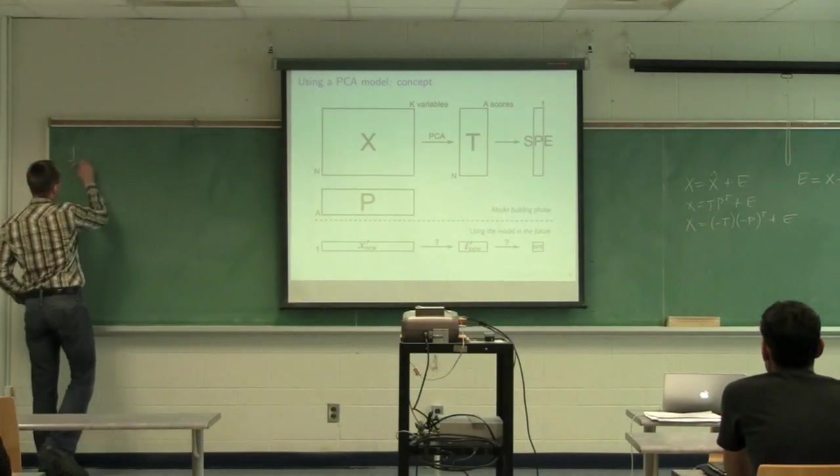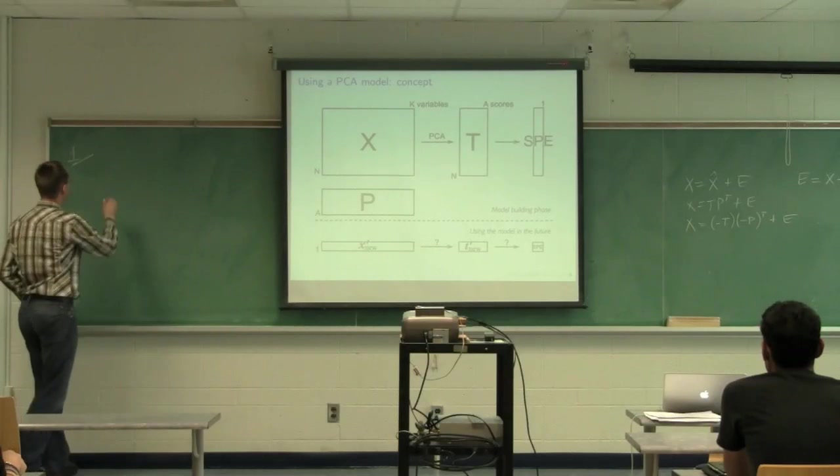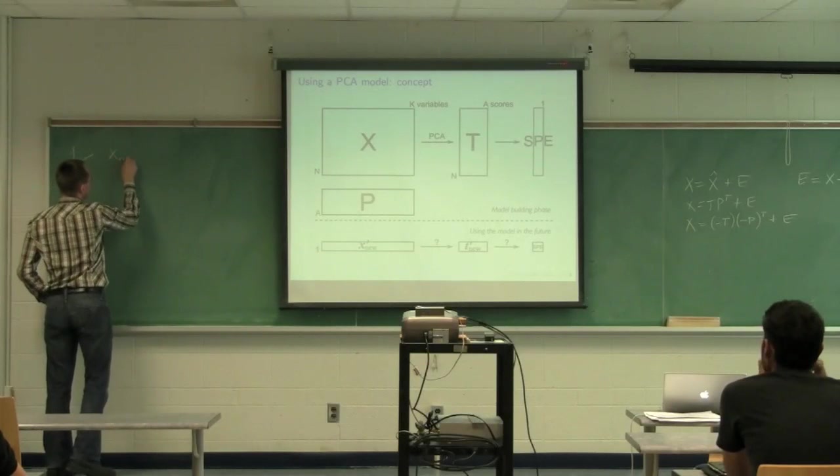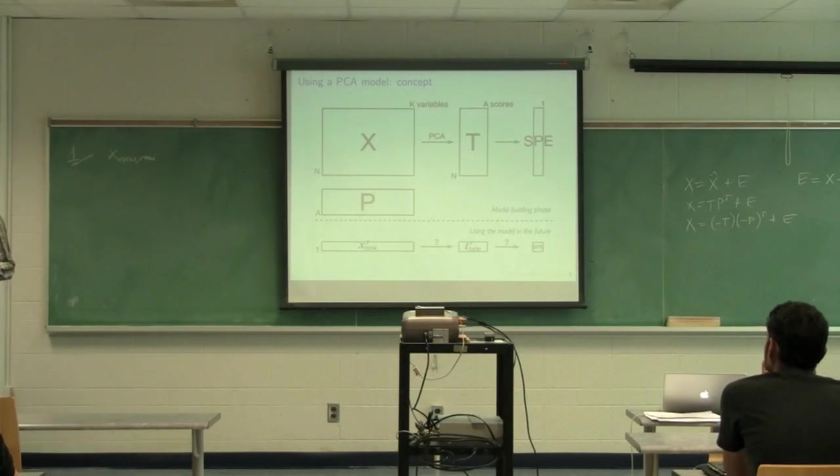So I actually left out a little step here prior to this. Step one is, let's call this x_new_raw. So this is the raw data that you measure now in the future. We first have to pre-process that data, right?